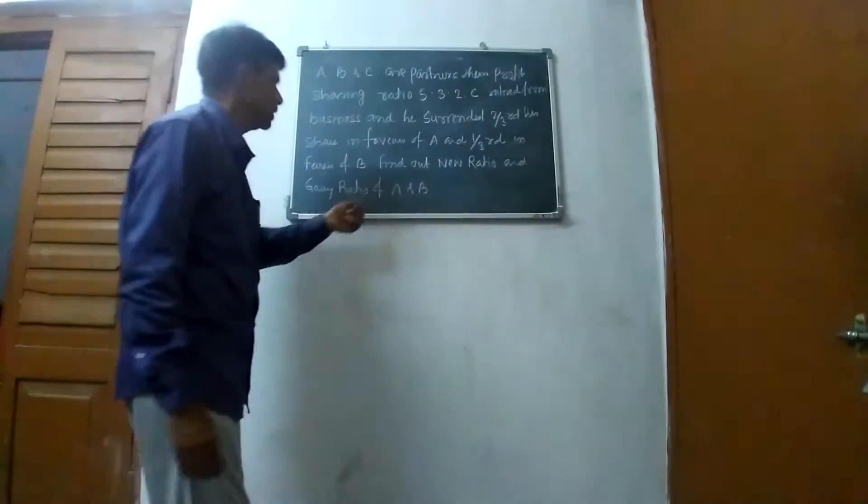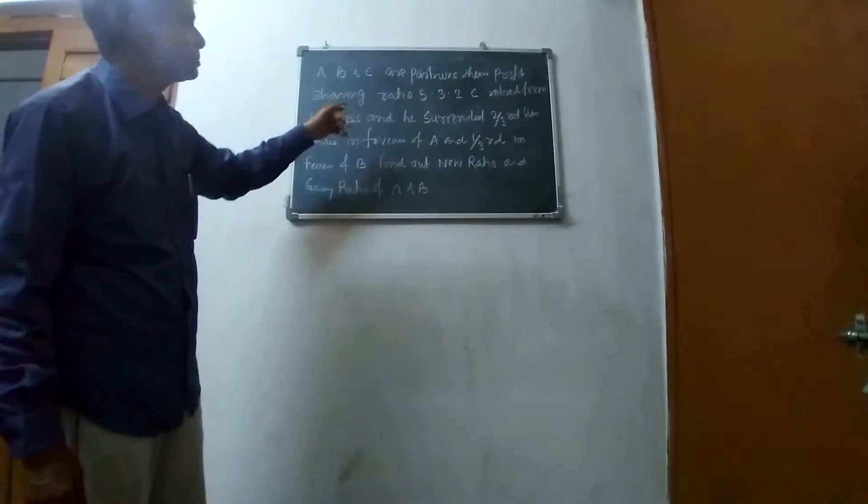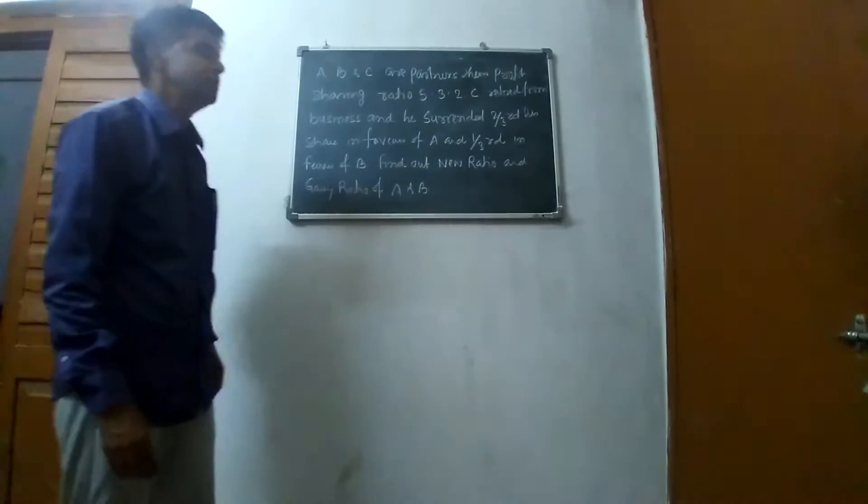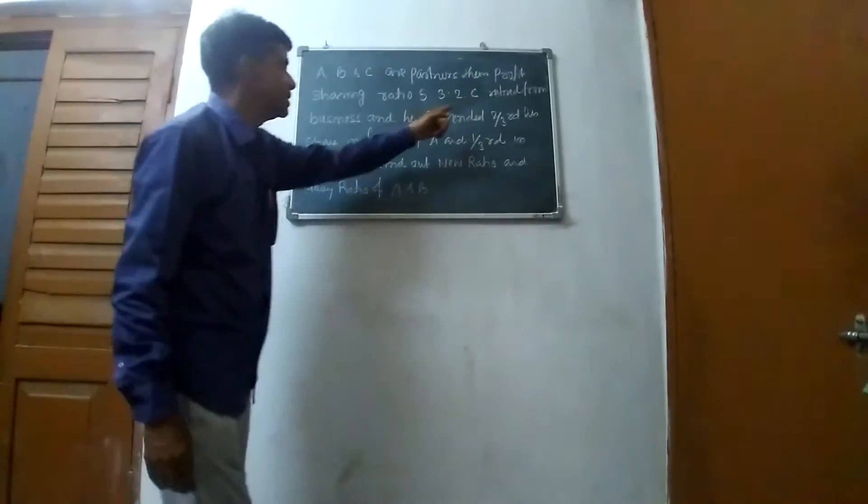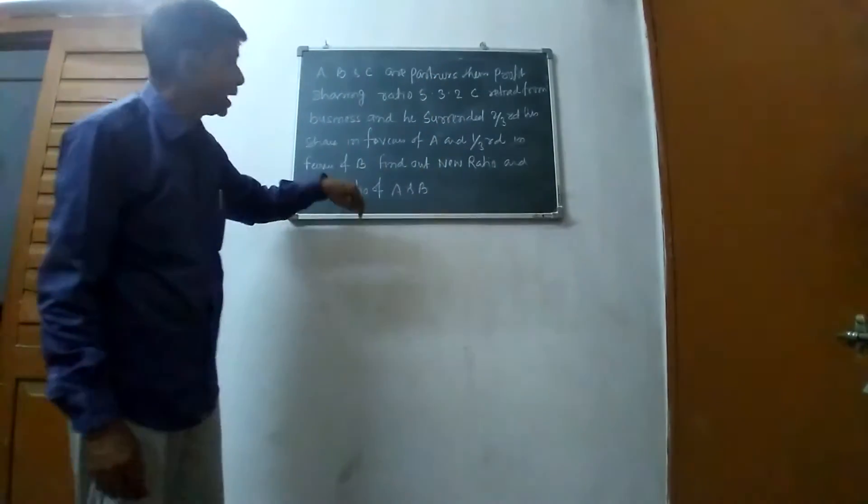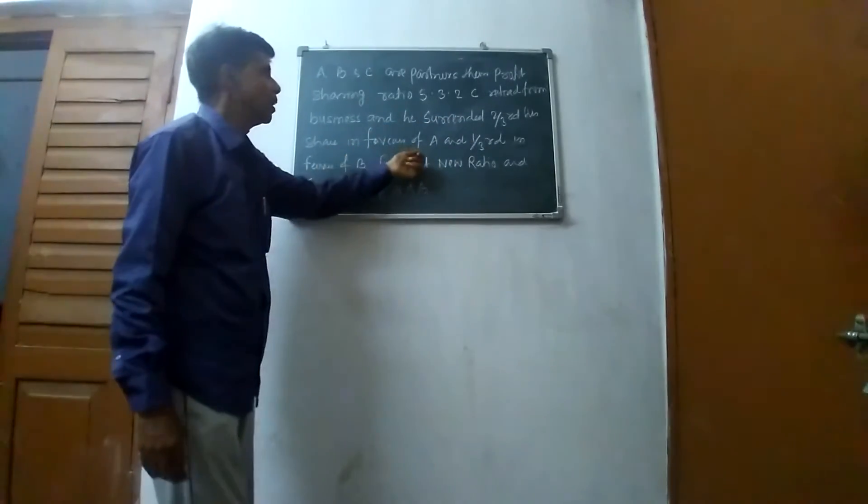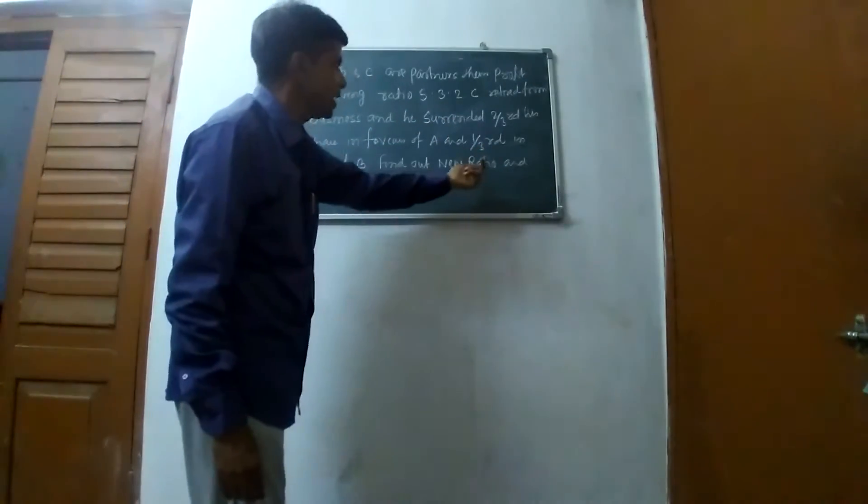Find out new ratio and gaining ratio of A and B. This question is very important. A, B, C have profit sharing ratio of 5:3:2. C is retired from the firm and gives 2/3rd share to A and 1/3rd share to B.